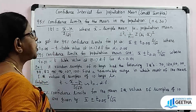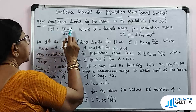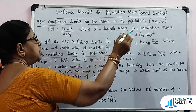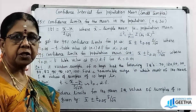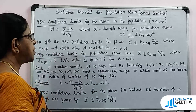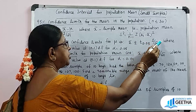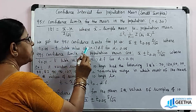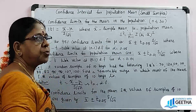The 95% confidence limits for the population mean for small samples use the statistic T equal to X̄ minus mu divided by S divided by root n, where X̄ is the sample mean, mu is the population mean, and S² is given by 1 over (n−1) times the summation of (Xi − X̄)². We get the 95% confidence limits for mu as X̄ plus or minus T at 0.05 into S by root n, where T at 0.05 is the T table value at n minus 1 degrees of freedom.